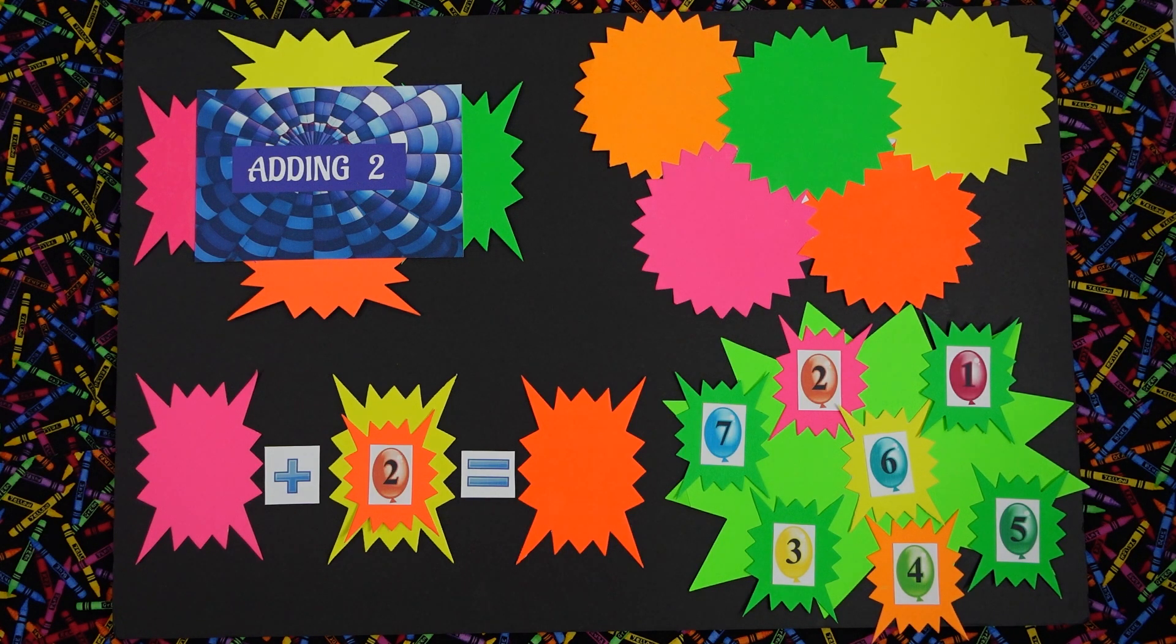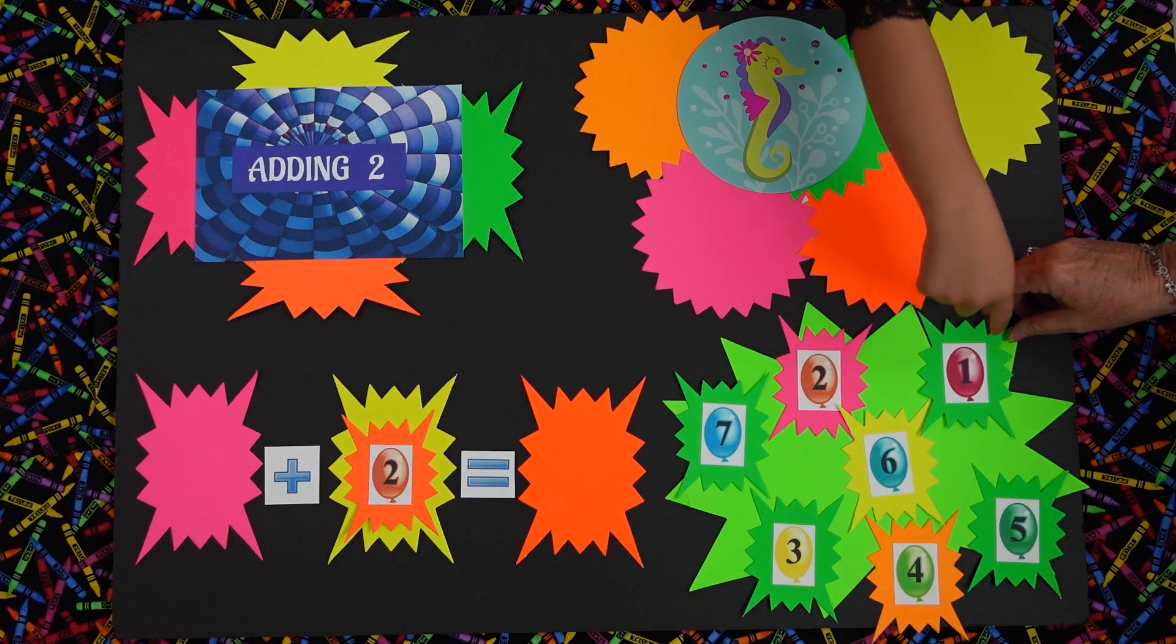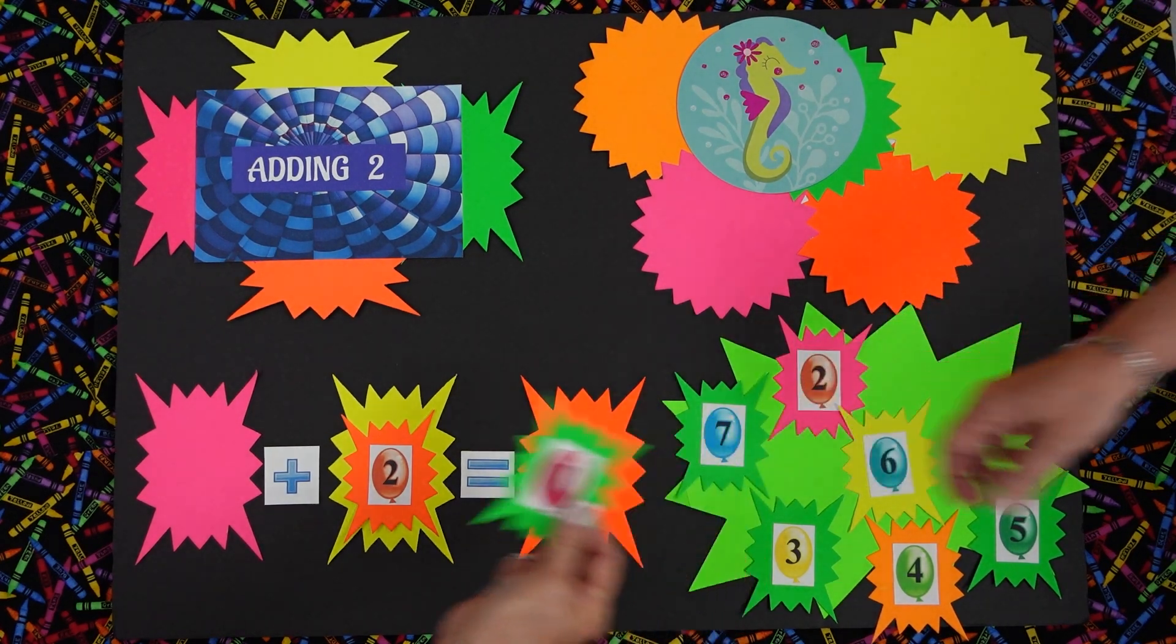I'm going to put down some things and then we're going to add two. Okay. Are you ready Lily? Yes. Okay. How many seahorses are down? One. One. Okay. So can you tell me where the one is and we can put it in the spot? That's right. There's the one.